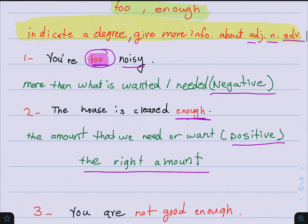Before we start with too and enough, I'd like to explain the meaning of each one and why we use them. When do we use too and enough? These words are used to indicate a degree — that is, to give more information about the adjective, the noun, or the adverb.